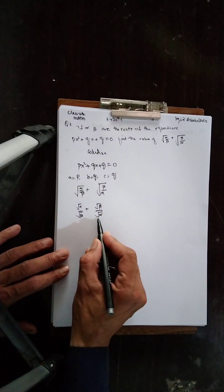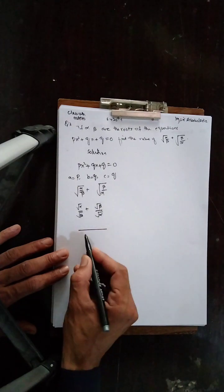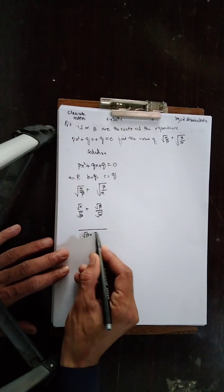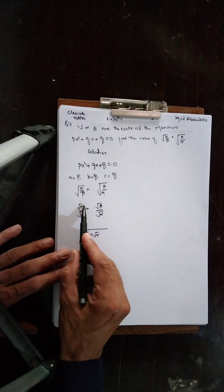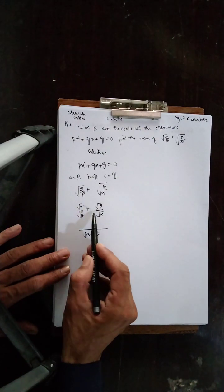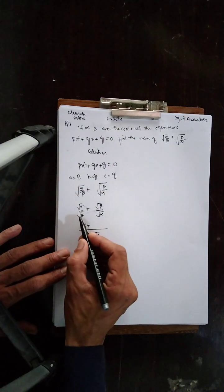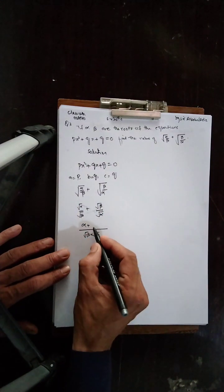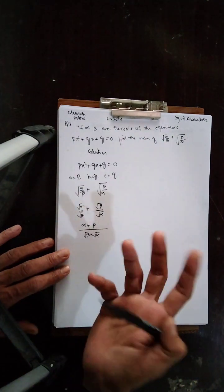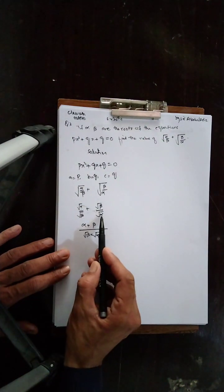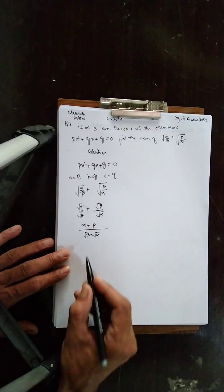Plus/minus میں نیچے والوں کا LCM نکالنا ہے — نیچے √β اور √α ہیں، دونوں کا LCM √β × √α ہوگا۔ اوپر والے cross multiply ہوں گے: √α کو √α سے multiply کریں تو صرف α آئے گا، √β کو √β سے multiply کریں تو β آئے گا۔ یاد رہے جب دو radicals ایک جیسے ہوں تو pair بنتا ہے اور ایک نمبر باہر آتا ہے۔